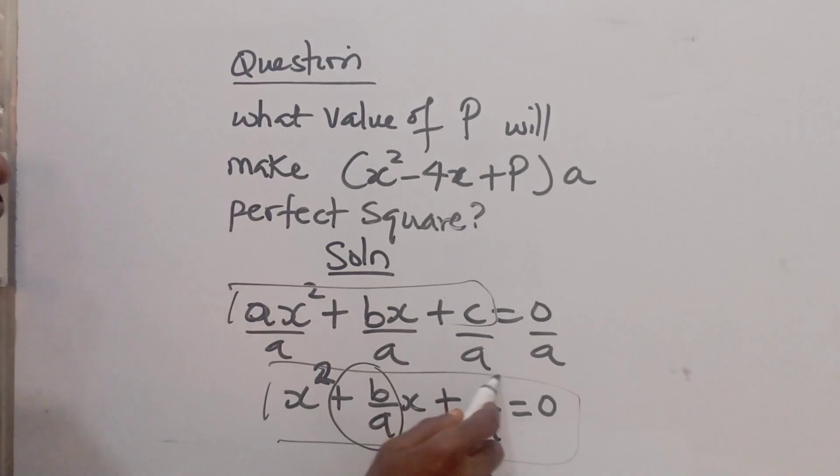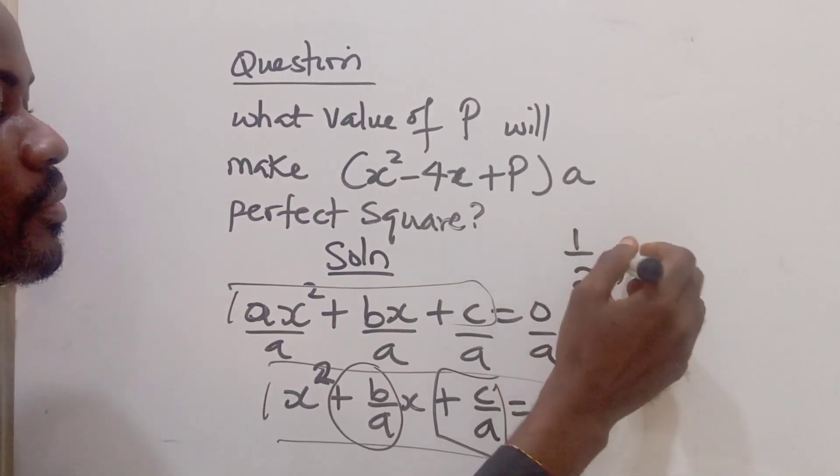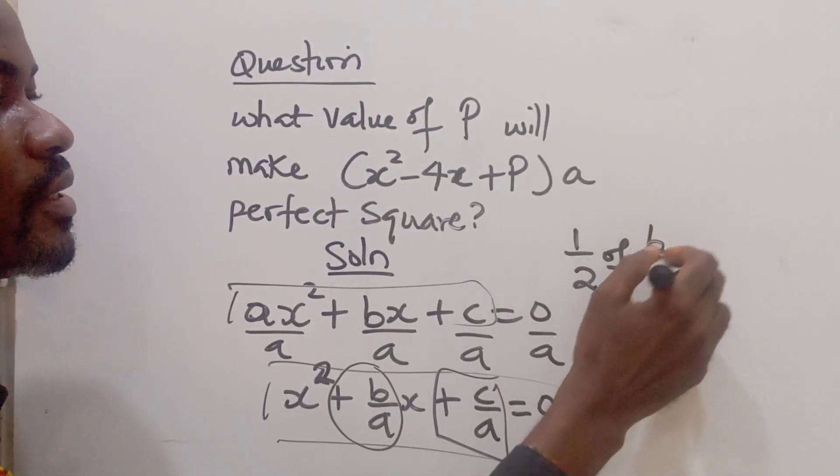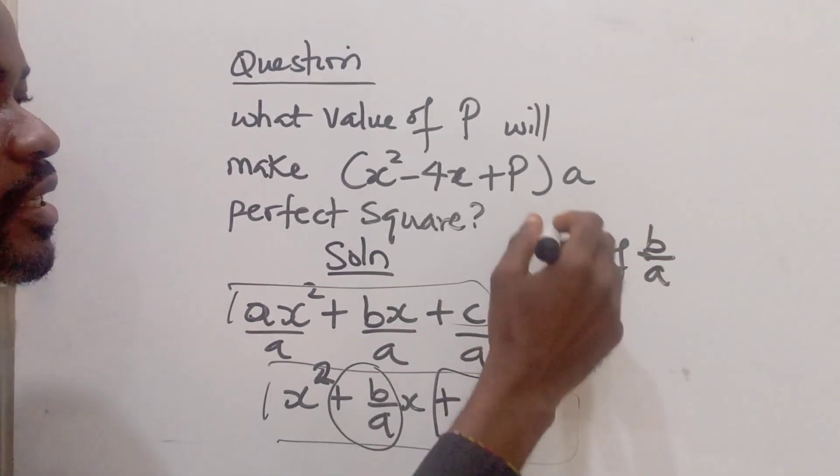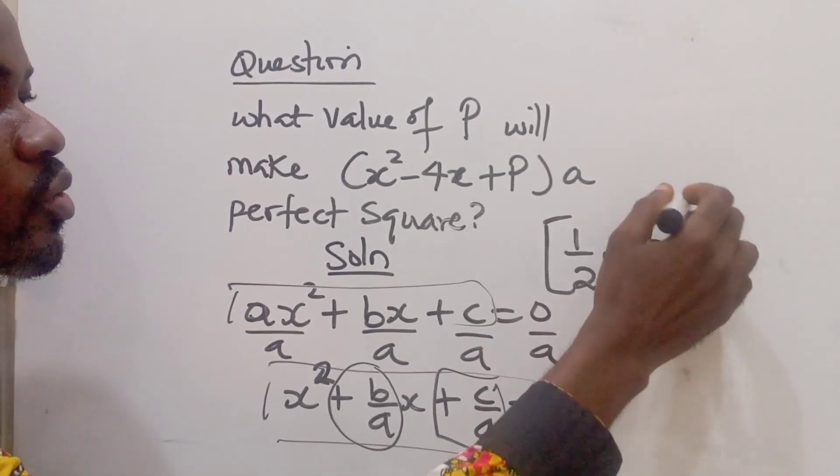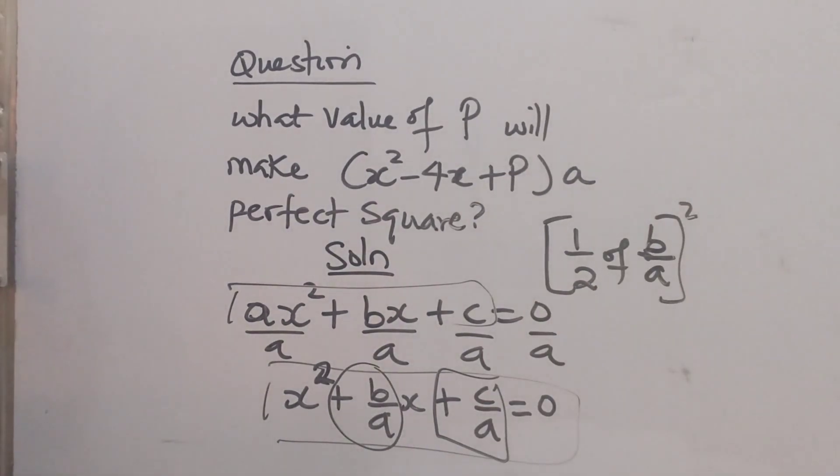Coefficient of x, you have half of it squared. So the value of this is always half of what? Half of b over a, all in brackets squared.